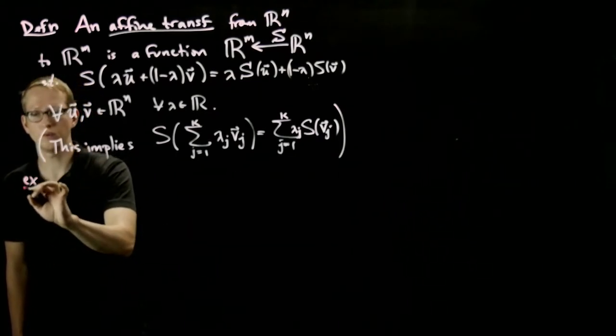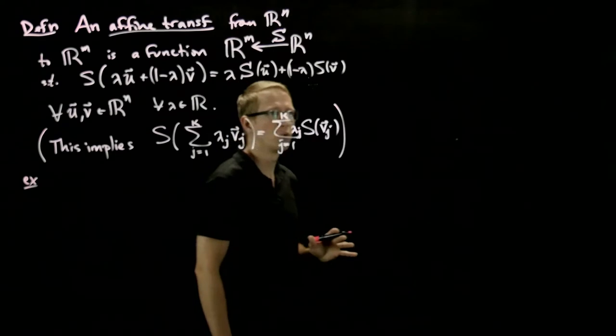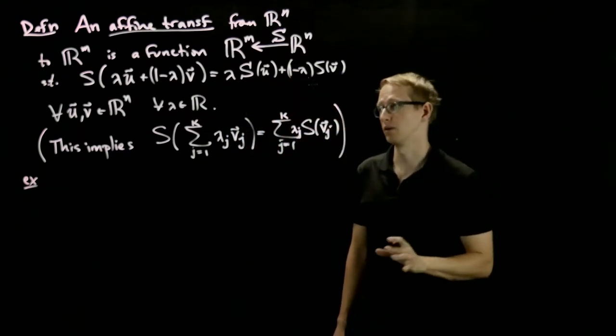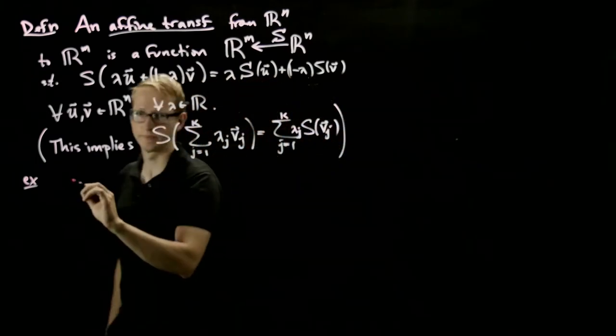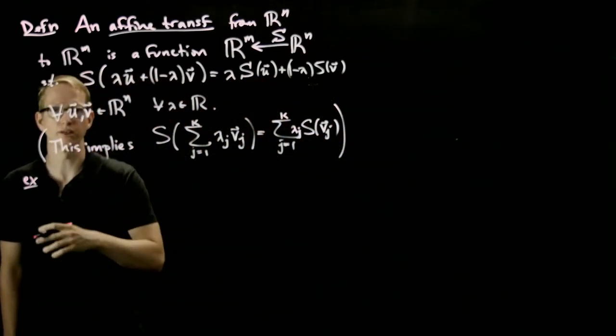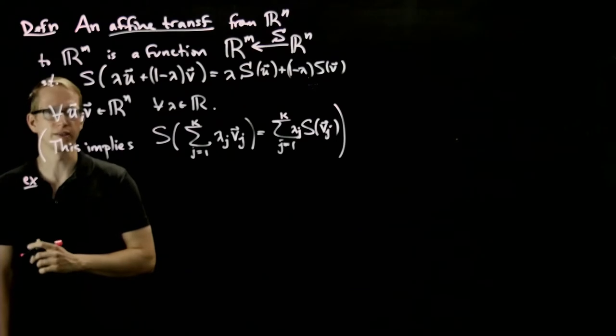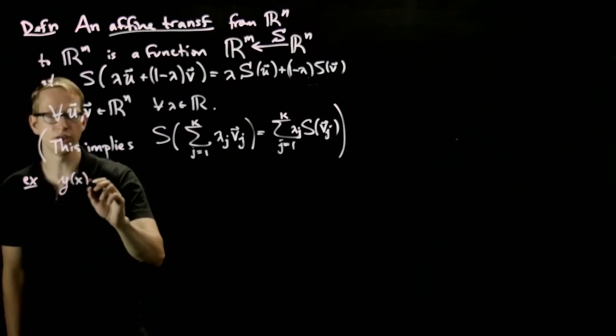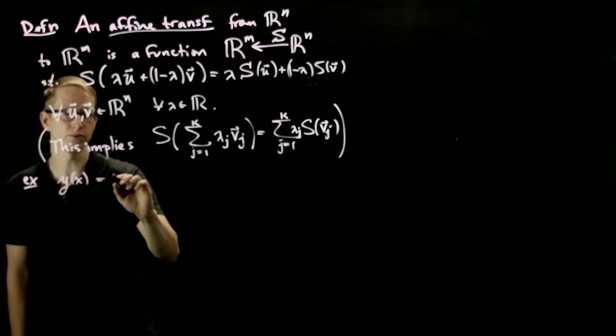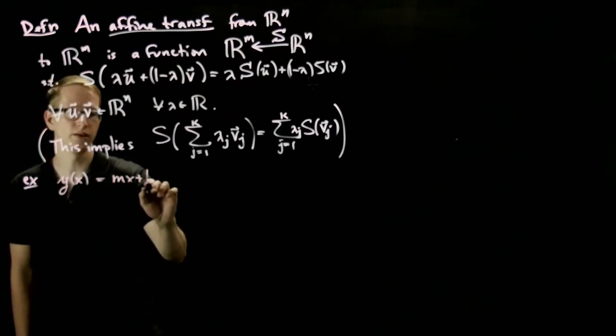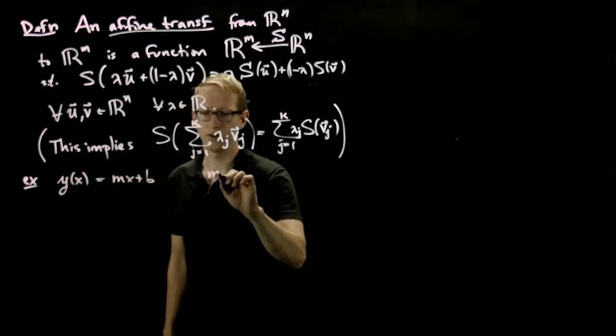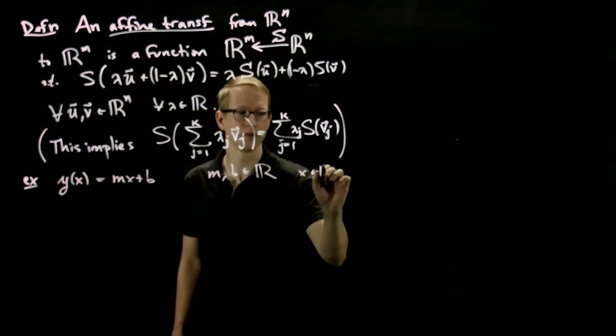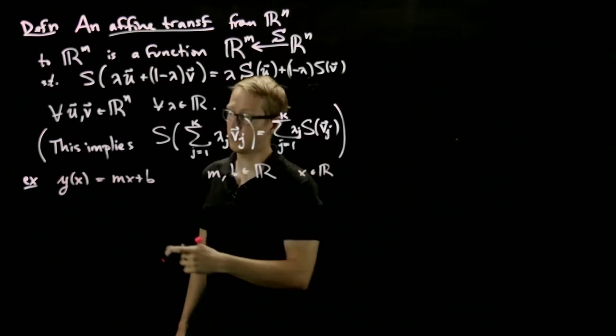Here's the example that I really like to think of when comparing linear transformations to affine transformations from your early learnings of math. So if we take the usual equation of the form y(x) = mx + b, where m and b are both real numbers, and x is a variable.